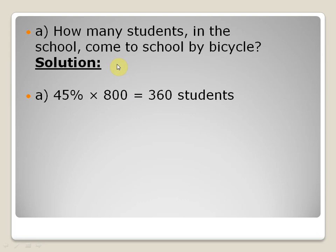In the previous slide you see that 45% of 800 students are coming with the bicycle. So 45% of total means 45 divided by 100 multiplied by 800. If you simply multiply 45 by 8, it becomes 360 students which are coming to school by bicycle.